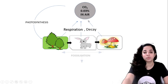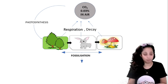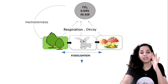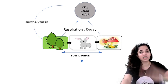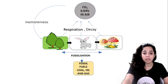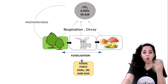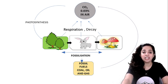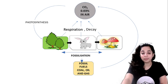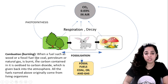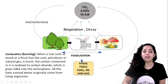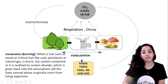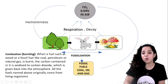When dead organisms are buried deep inside the layers of the earth under great pressure, they convert into fossils. Fossil fuels such as coal, oil, and natural gas are formed by the decay and fossilization of these organisms. When fossil fuels or wood are burnt, the carbon contained in them is oxidized to carbon dioxide, which is released back into the atmosphere. All these fuels originally come from living organisms.